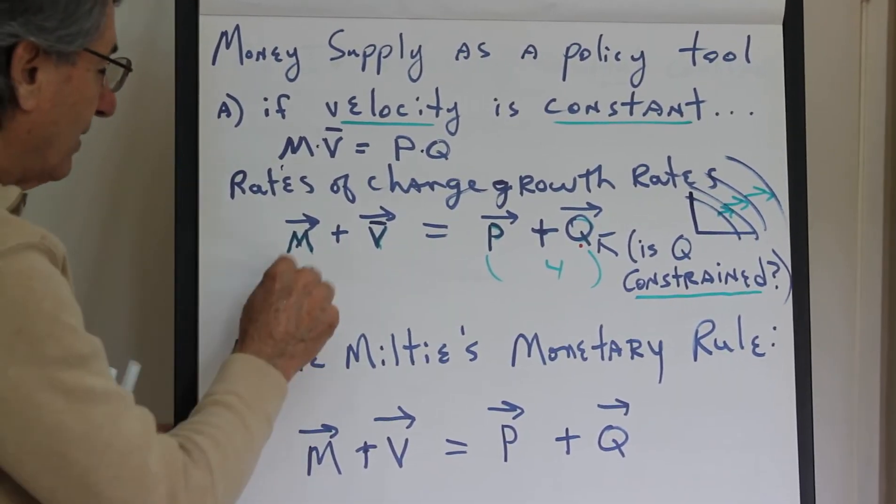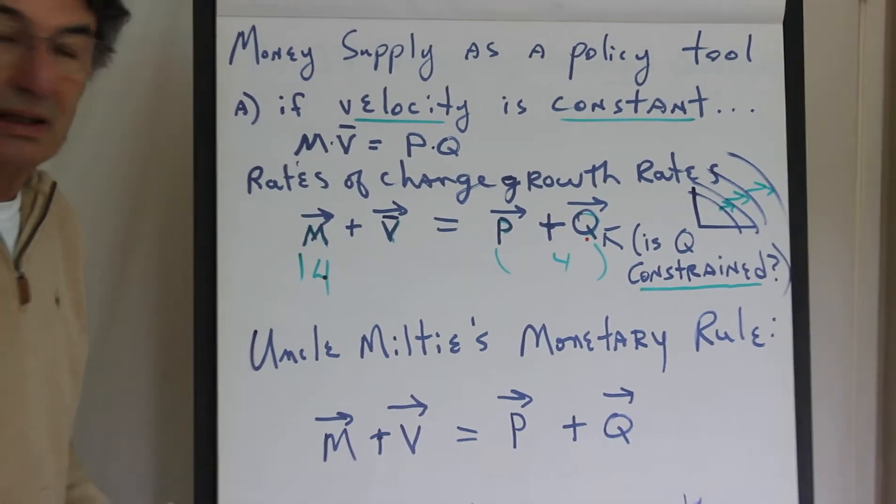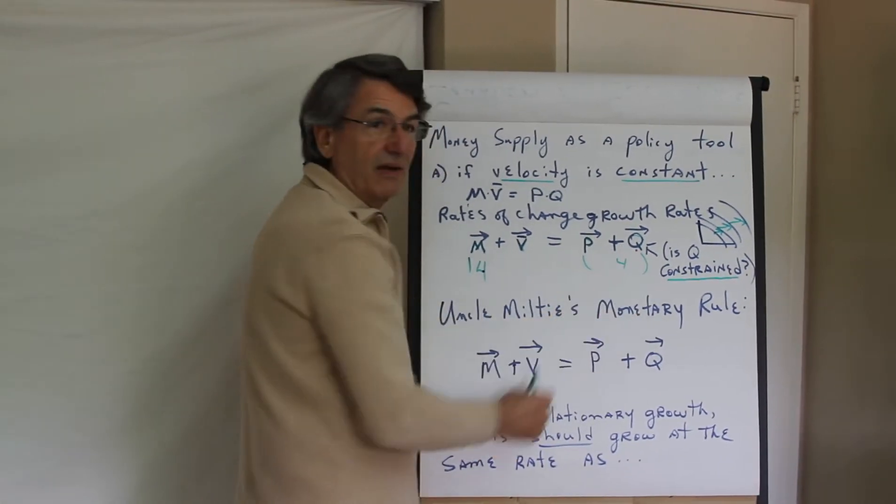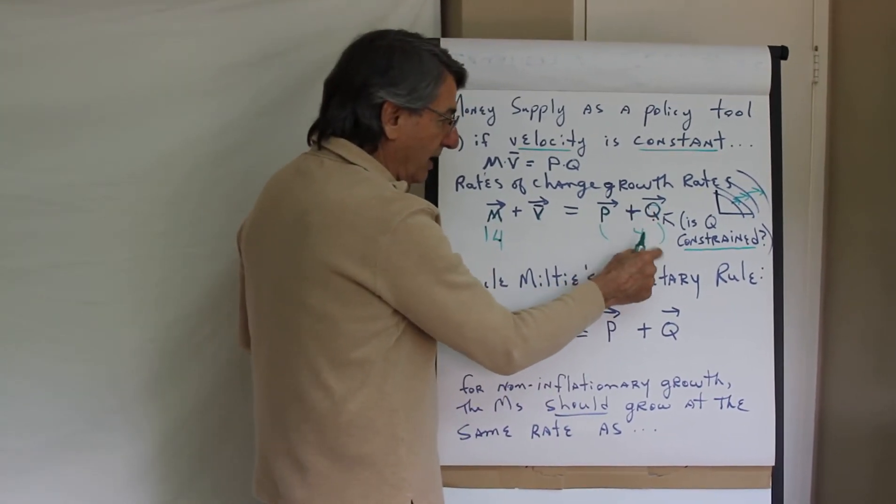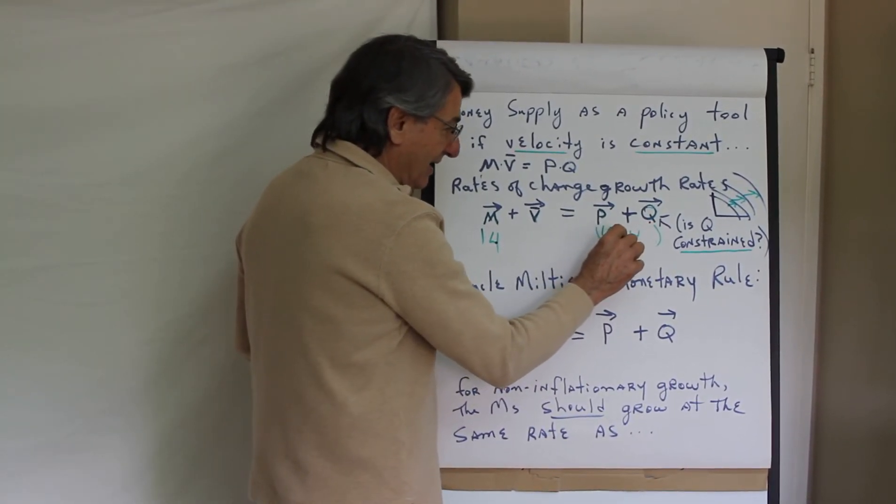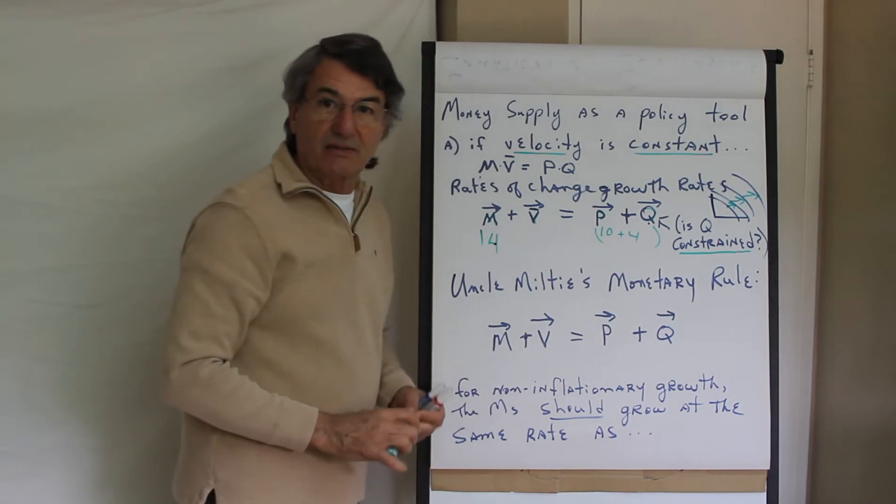What if money supply grows at 14%? Then 4% of that increase in the money supply will be soaked up by quantity growth, and the other 10% must be in price level changes.